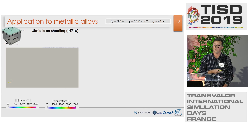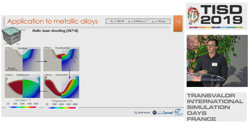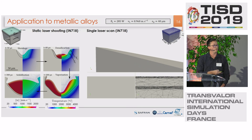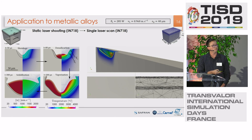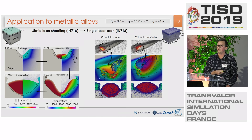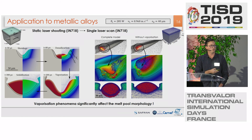I will talk about some applications to metallic alloys — for instance, a static laser shot on a nickel super-based alloy. As you can see on the velocity distribution and the temperature, we are able to observe the different stages during the process: the shrinkage of the powder into a melt pool, the densification due to the surface tension forces, then when the vaporization stage is obtained the recoil pressure is applied, and finally the solidification after the laser stops. The most important thing is that when comparing the complete model and the model without vaporization phenomena, we can see that vaporization significantly affects the melt pool morphology and it is really important to take it into account.